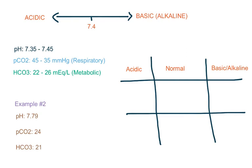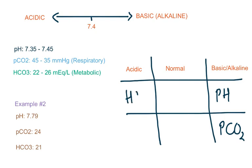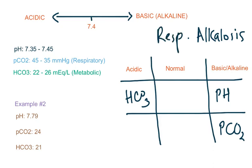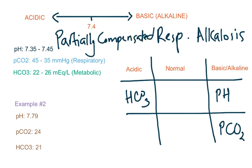Here's another example. pH is 7.79, which is more than 7.45, so it is alkaline. pCO2 is 24, which is less than 35, so it is again alkaline. But bicarb is 21, which is less than 22, so it is on the acidotic side. pH determines this is alkalosis; carbon dioxide determines it is respiratory alkalosis. The low bicarb on the acidic side shows it is trying to compensate, so we term this partially compensated respiratory alkalosis.